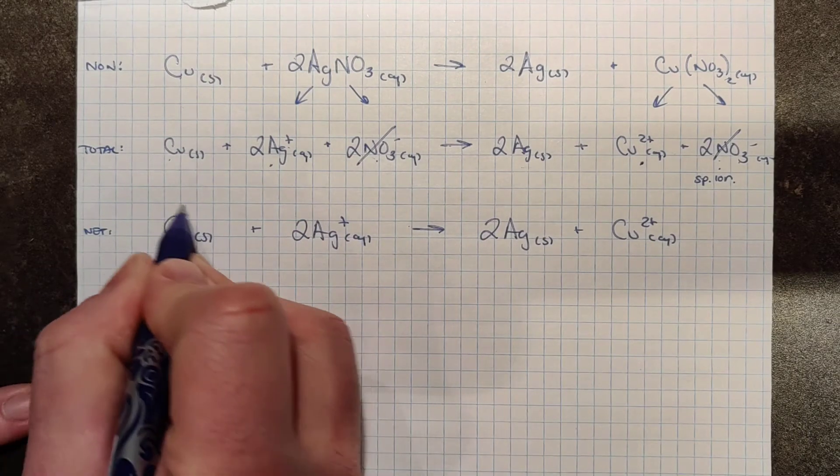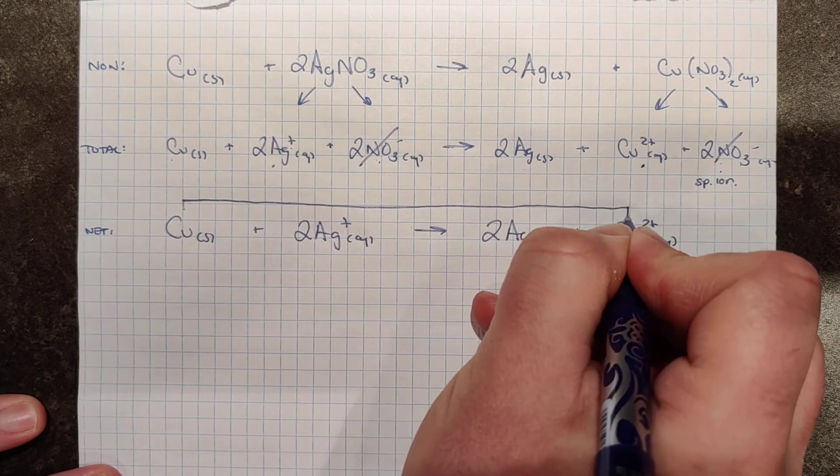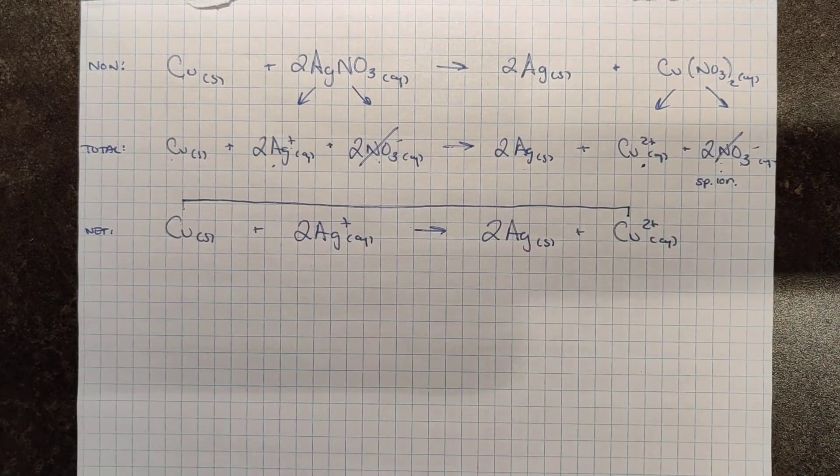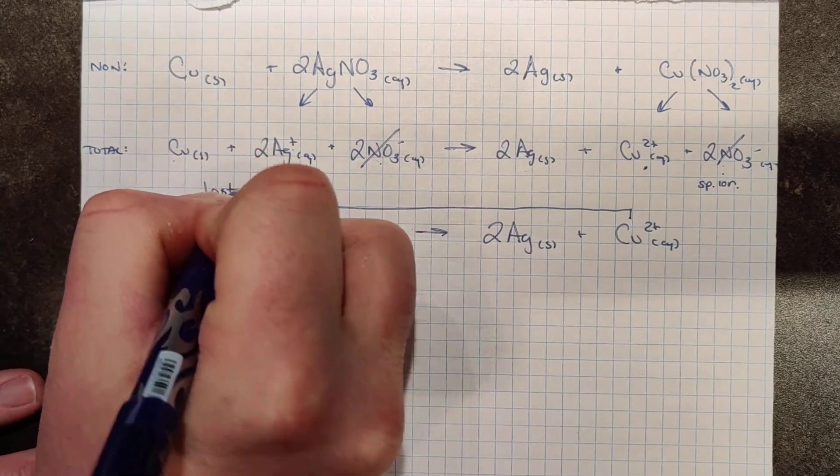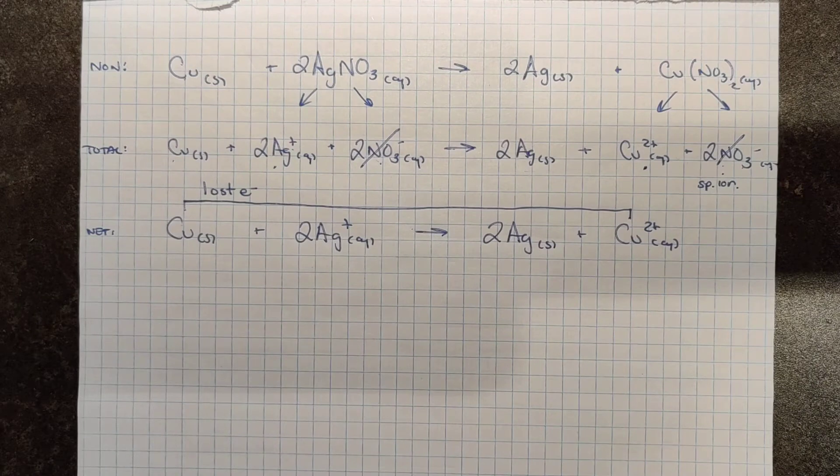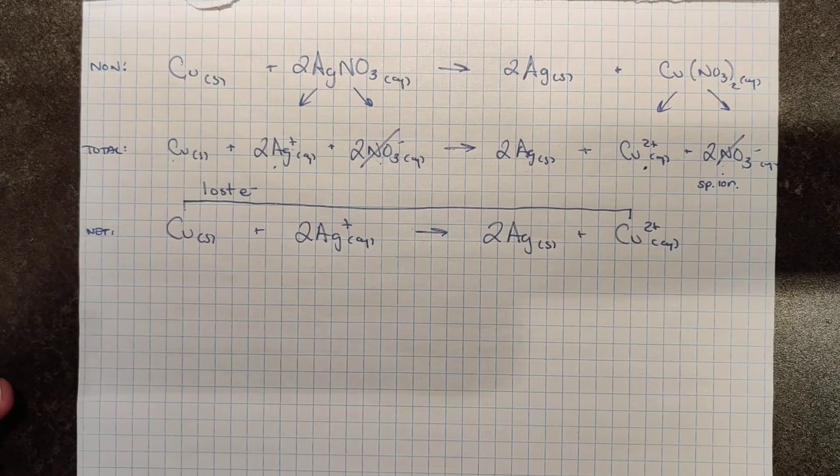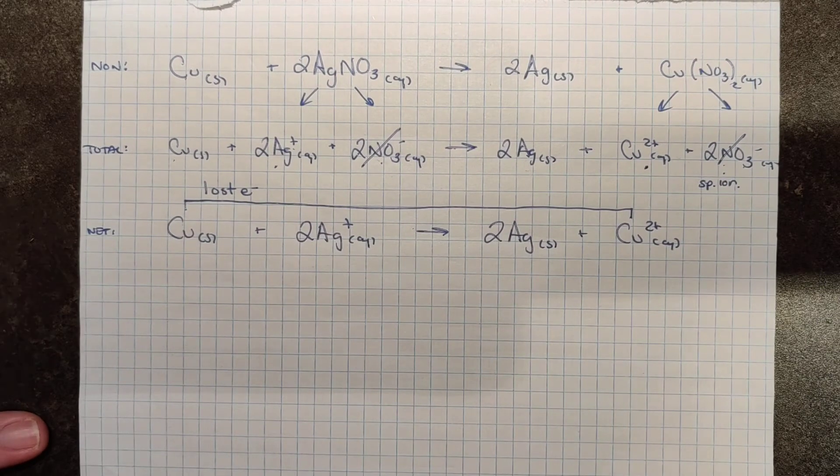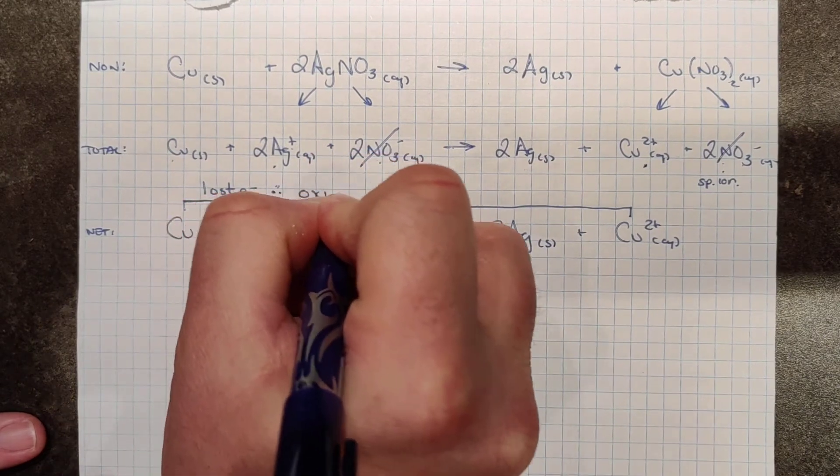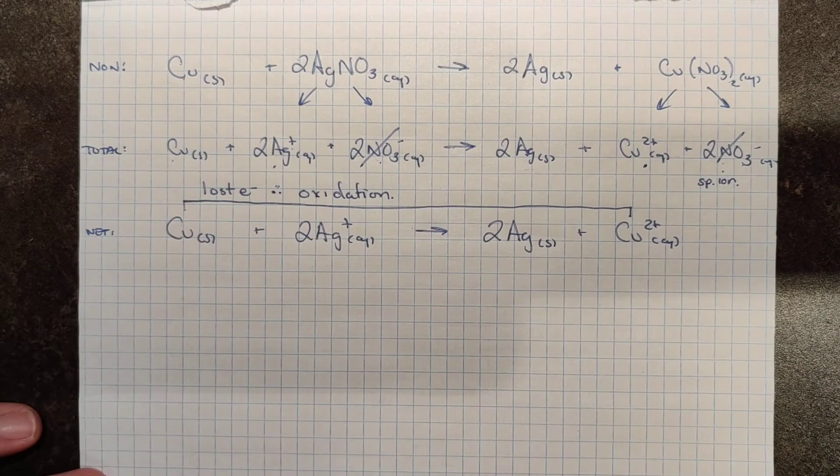So we can start getting into the redox of these single replacement reactions. And if you take a look at copper, it was neutral. But if I take a look at copper on the other side here, copper has lost two electrons. It's got a 2 plus charge now. So I can see that I've lost electrons as copper transforms from elemental copper into copper 2 plus. Now ask yourself, what is the name of the process that describes loss of electrons? The name of that process is oxidation. So we can identify that copper is oxidized in this chemical reaction.